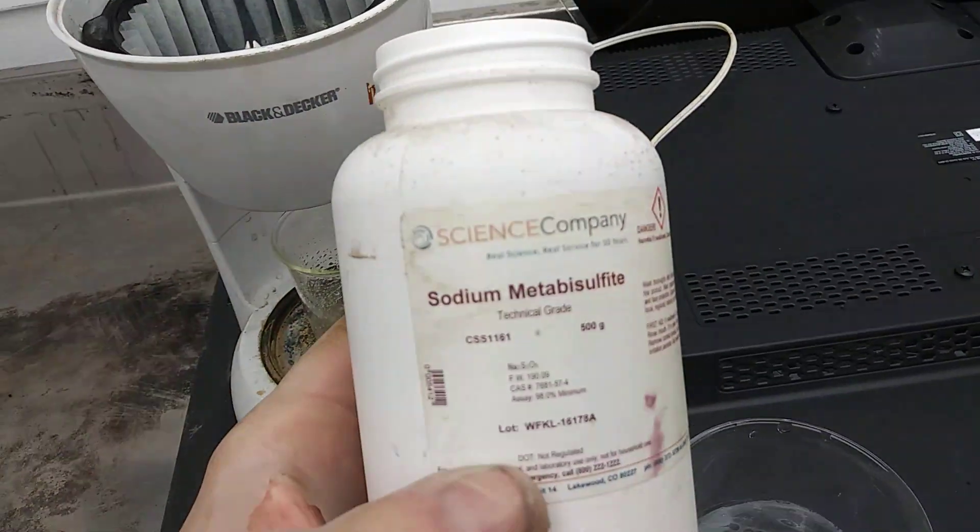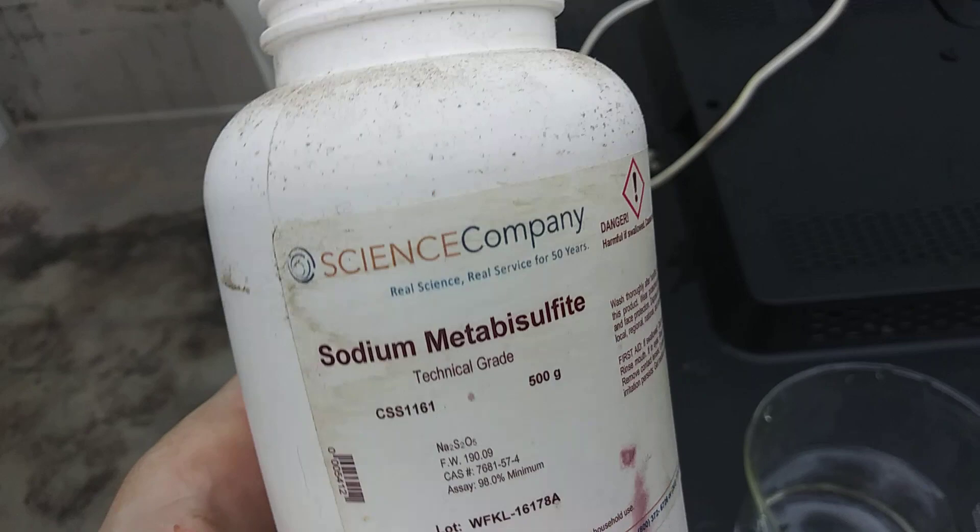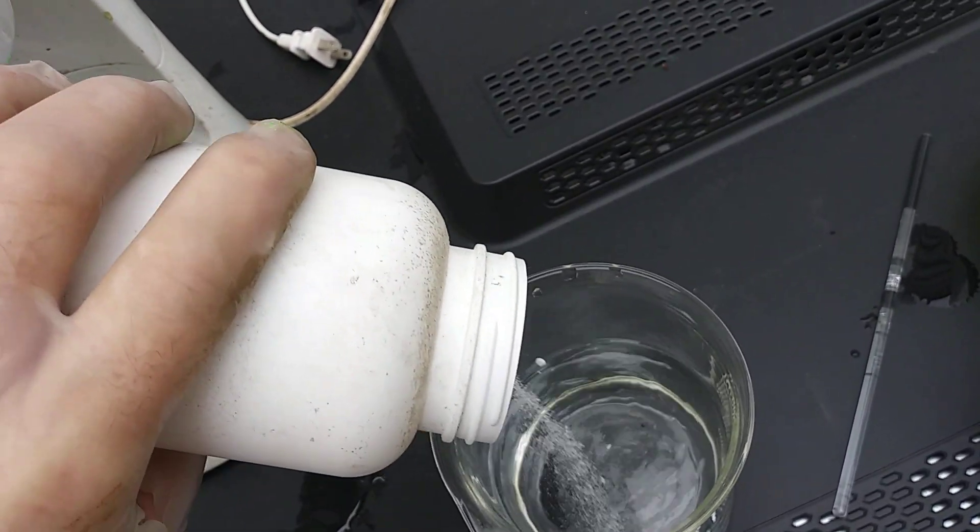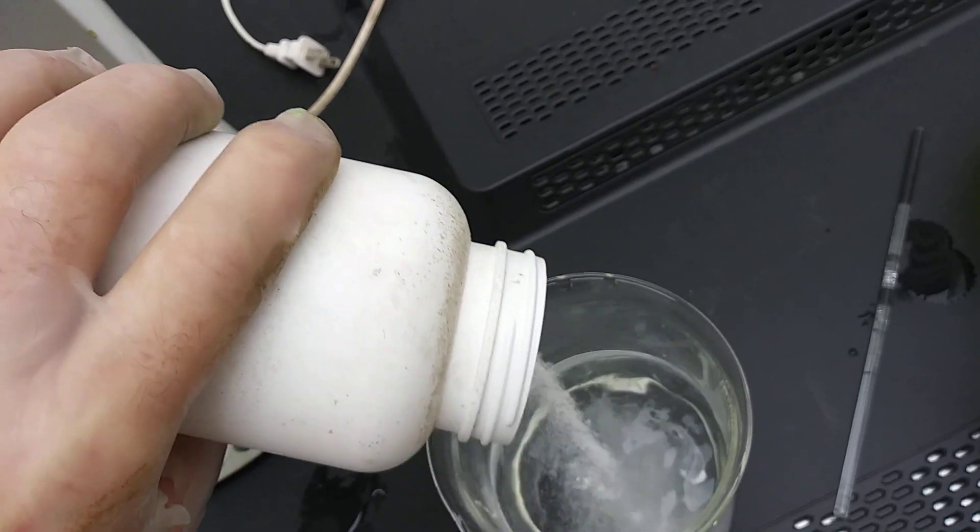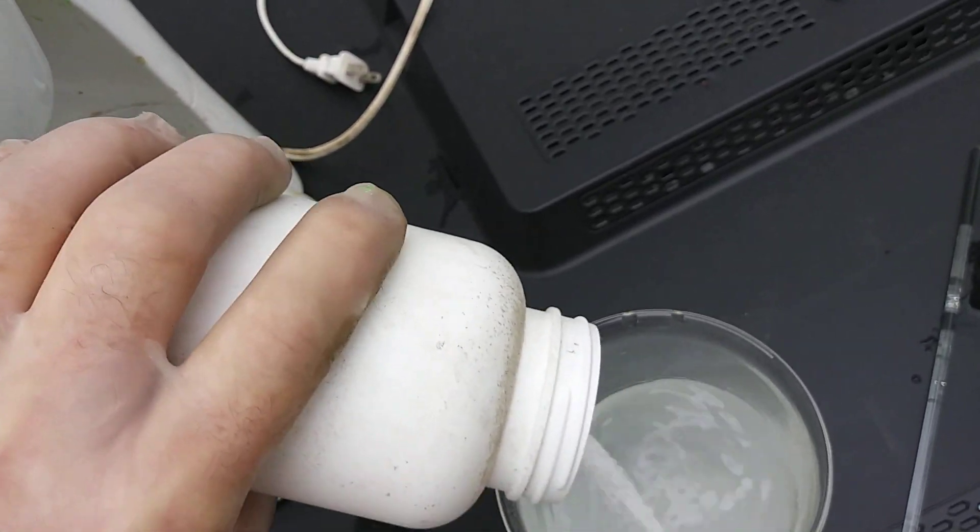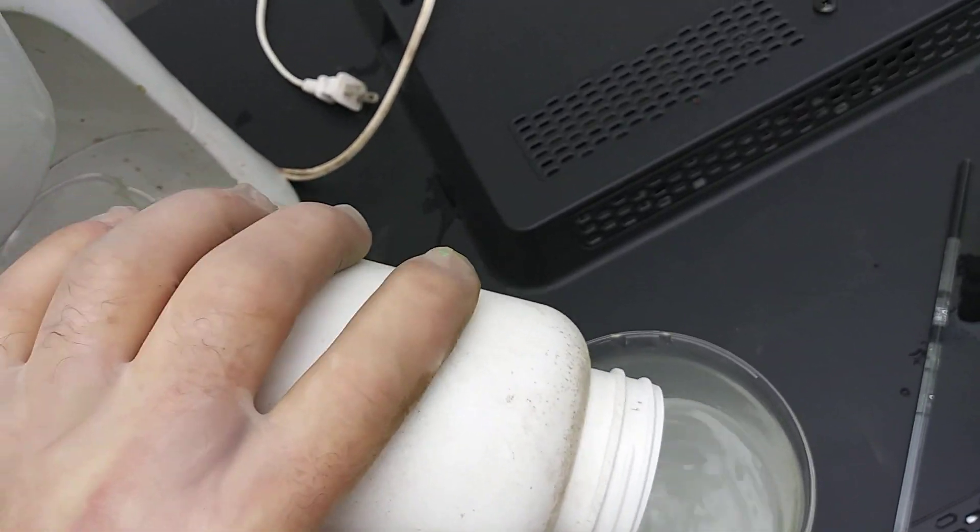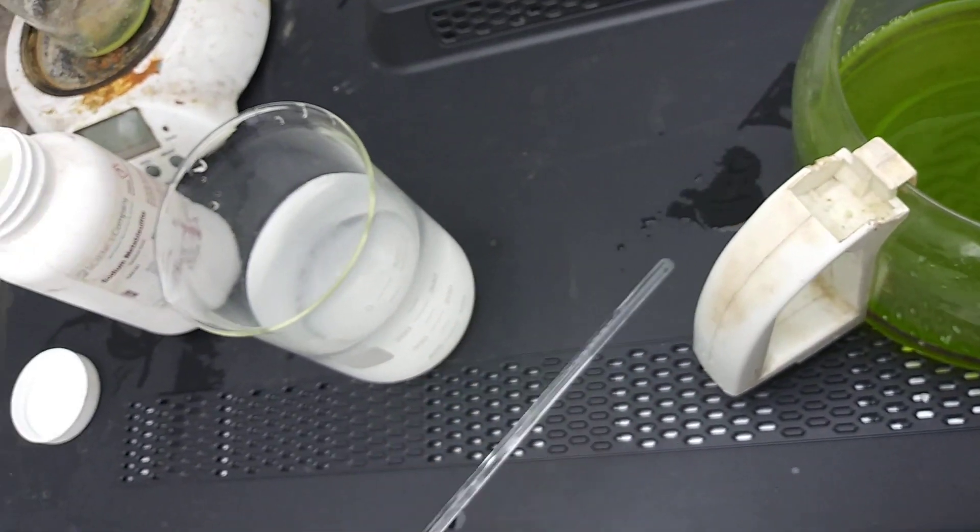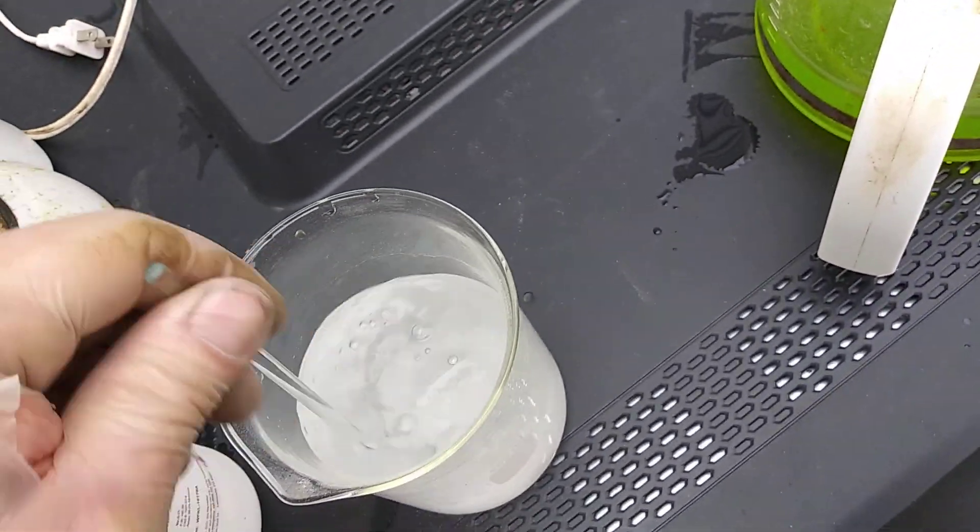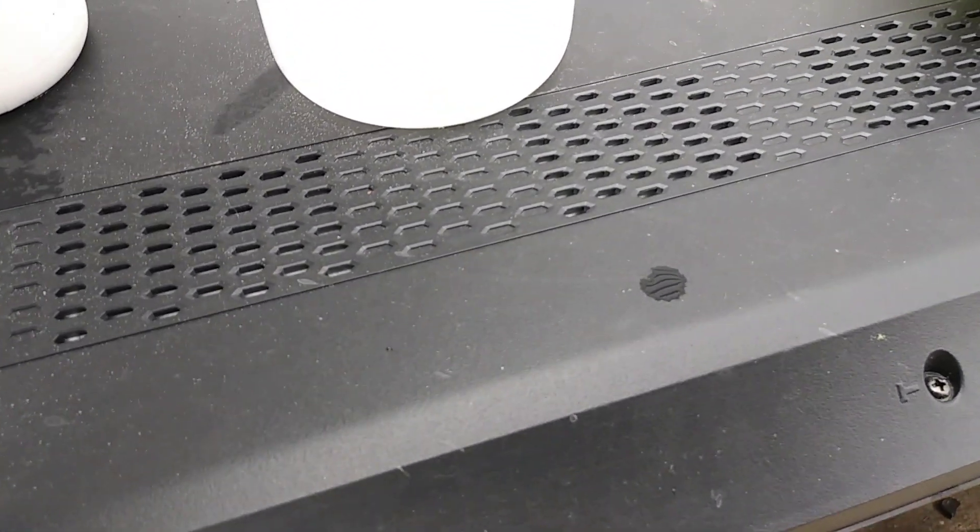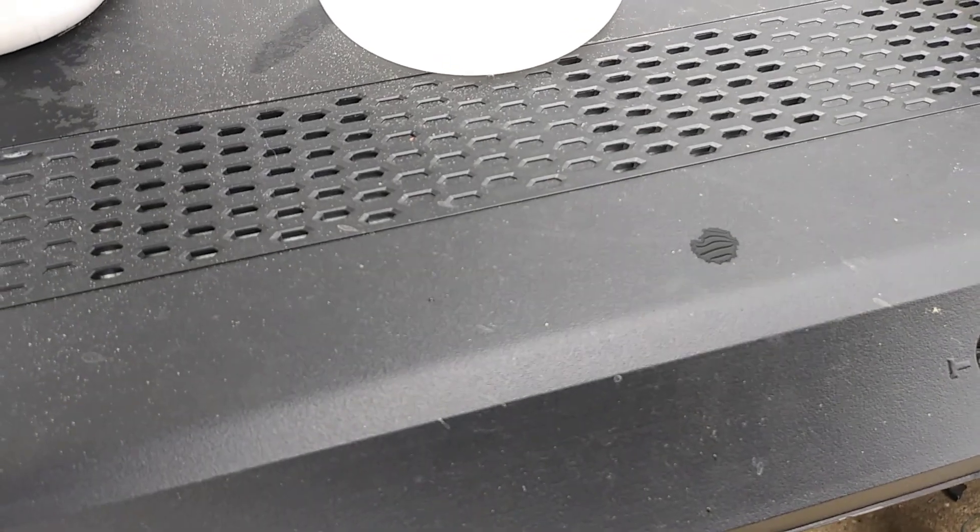So what I want to do now is take sodium metabisulfite and kind of just eyeball it. Some people say you can't put too much, so I'm just dumping it in there. I've done this quite a few times. Some people take the powder and put it right in there. I like to dissolve it in water. Takes a little bit to dissolve sometimes.